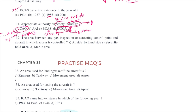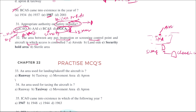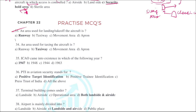The area between the passenger inspection or screening control point and the aircraft, where access is controlled, is known as the SHA — Security Hold Area. After check-in, the passenger goes to the screening point; the area between the screening point and the boarding gate is the Security Hold Area, after which is the air side.